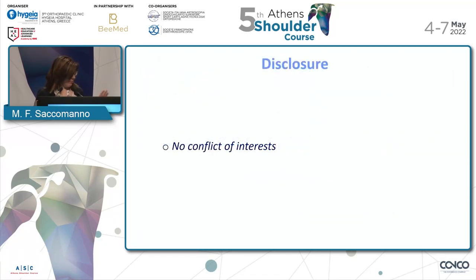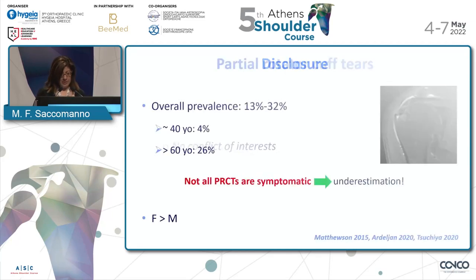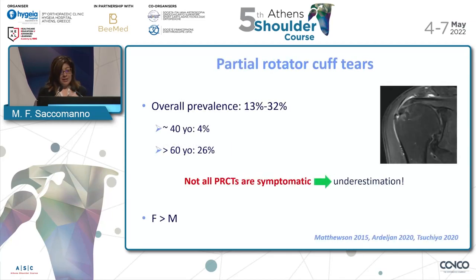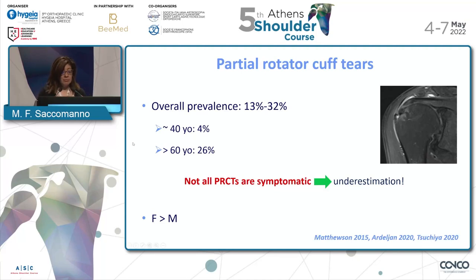Besides the embarrassing picture, I'm Anna-Katerina Shaw, and I have no disclosure for this topic. We talk about partial rotator cuff tears. As we know from the previous presentation, the overall prevalence of partial rotator cuff tear is around 13 to 32 percent.